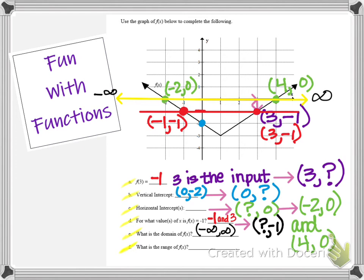Now let's take a look at the range. For the range, I want to look at the graph from bottom to top, because the range is the y values. As I go towards the bottom on the y axis, I don't go all the way down to negative infinity — this graph has a minimum value, and the ordered pair at that minimum point is (1, -3). Since we're talking about the range, we're only concerned with the output value, so the minimum output value is negative 3. The arrows on the graph are increasing and pointing upward, which tells me the y values increase all the way to positive infinity. So my range for this graph is [-3, positive infinity).